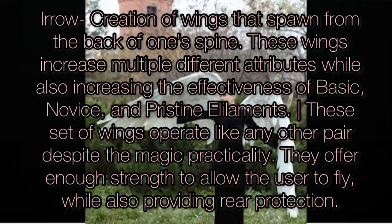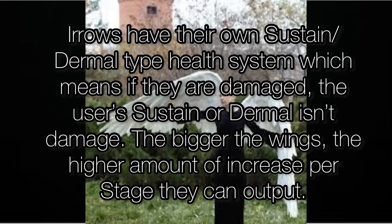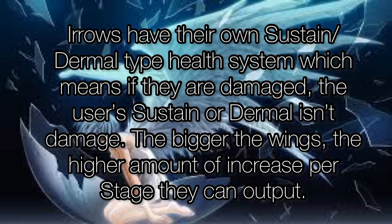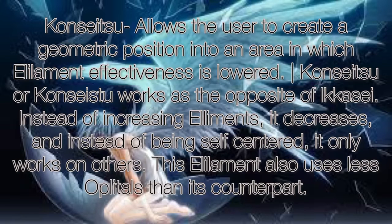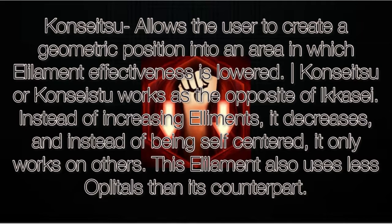Arrow is the creation of wings that spawn from the back of one's spine. These wings increase multiple different attributes while also increasing the effectiveness of basic, novice, and pristine elements. These wings operate like any other pair — despite the magic practicality they offer, they provide enough strength to allow the user to fly while also providing rear protection. Arrows have their own sustain/dermal-type health system, which means if they are damaged, the user's sustain or dermal isn't damaged. The bigger the wings, the higher the amount of increase per stage they can output.